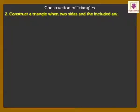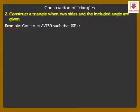Now, let's learn how to construct a triangle when two sides and the included angle are given. Construct Triangle TSR such that Segment SR is equal to 4.2 cm,